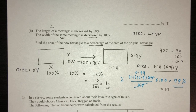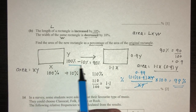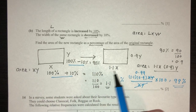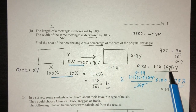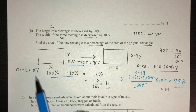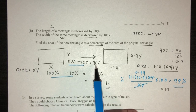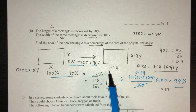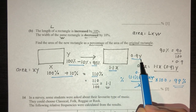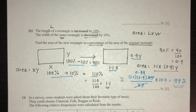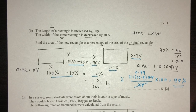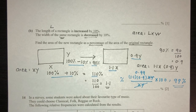So your answer is 99 percent of the original area. That's the answer for Part B. The main point here is finding the new length and the new width — that's the key step. Once you have those, finding the area and the percentage is straightforward. I hope that was helpful. Thank you for watching, and if you have any questions, leave a comment below.